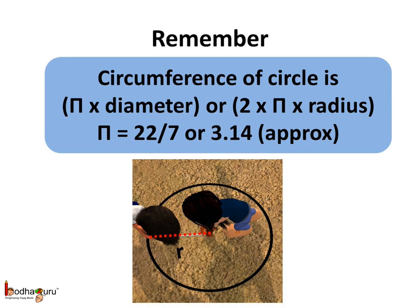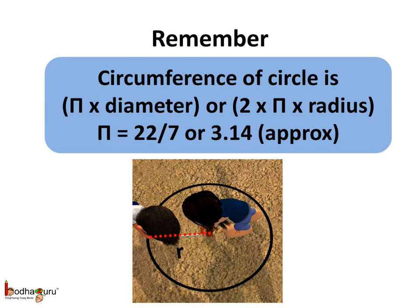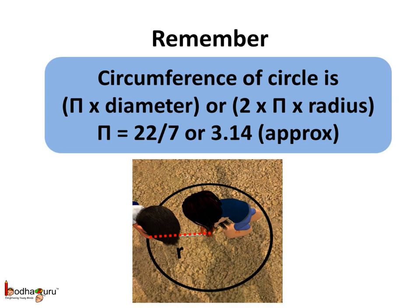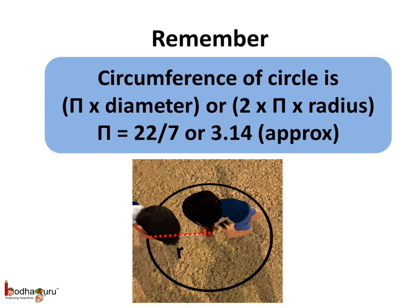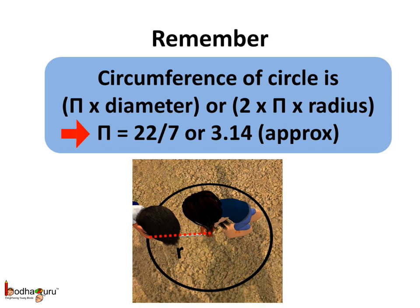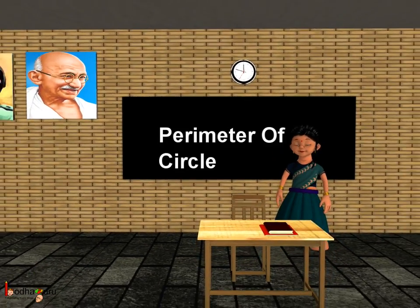If we know the radius or the diameter of the circle, we can find the circumference. The circumference of the circle is pi multiplied by the diameter. If we know the radius, then the diameter is equal to twice the radius, so we can write 2r instead of diameter. Thus, the circumference would be 2 pi r. Always remember, the value of pi is 22 by 7, or 3.14 approximately. That's all for now. Bye-bye children.